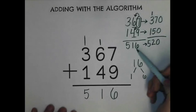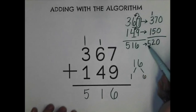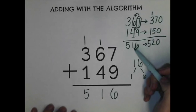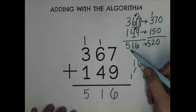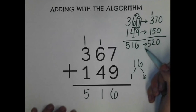So now I'm going to look at my two sums. My estimated sum is 520, where my actual sum is 516. 516 rounds up to 520, so my answer is definitely reasonable.